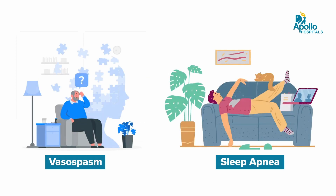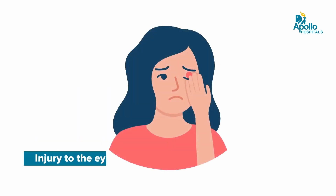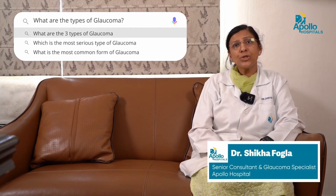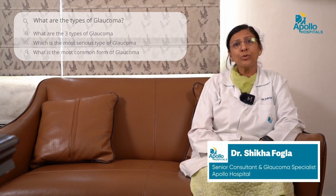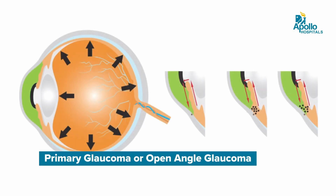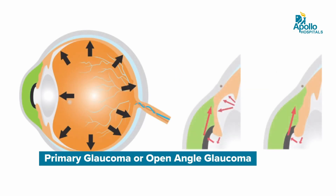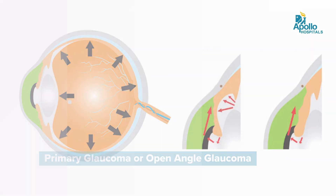If you sustain any injury to the eye, there are more chances of you getting glaucoma. What are the types of glaucoma? Glaucoma is usually of two major types: primary and secondary. Primary glaucoma can be open angle glaucoma, which is the most common variety, and the second is the angle closure variety.